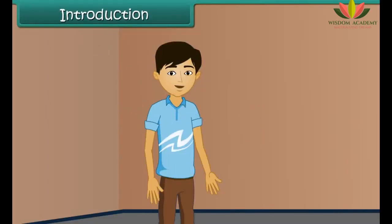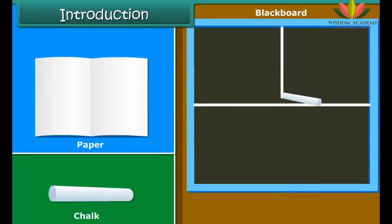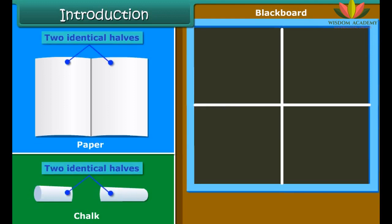Hello children, you may have found that on folding or cutting some objects like blackboard, chalk, paper, along a particular line, we get two identical halves.